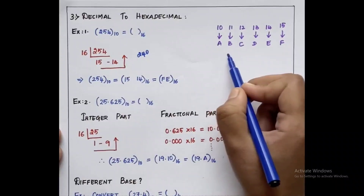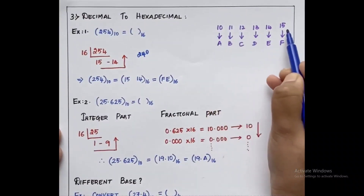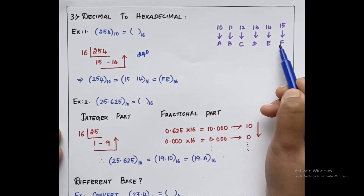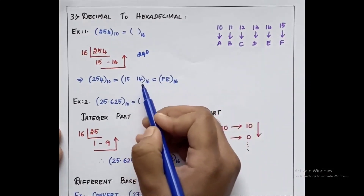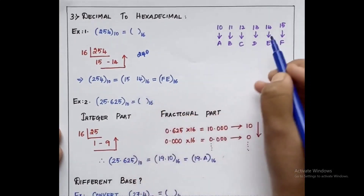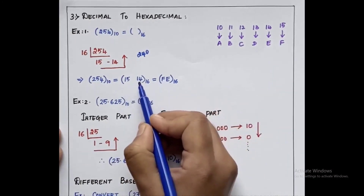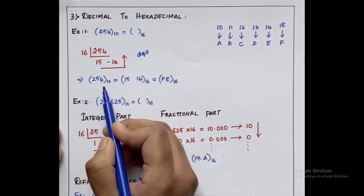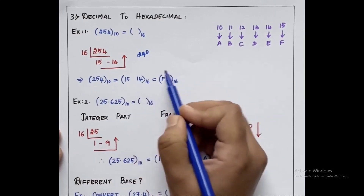The direct values of hexadecimal cannot be left as such — we have to make a small replacement. After the value of 9, from 10 to 15, they are replaced with alphabets A to F. So 10 is replaced with A, 11 with B, 12 with C, 13 with D, 14 with E, and 15 with F. We have 15, so it should be replaced with F. Next, 14 has the equivalent value E, so we write E in place of 14.